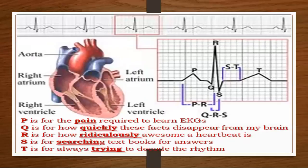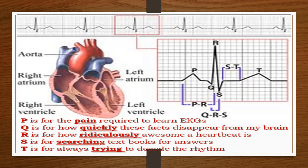Here's a mnemonic to help you remember that: P is for the pain required to learn EKG, Q is for how quickly these facts disappear from my brain, R is for how ridiculously awesome a heartbeat is, S is for searching textbooks for answers, and T is for always trying to decode the rhythm.